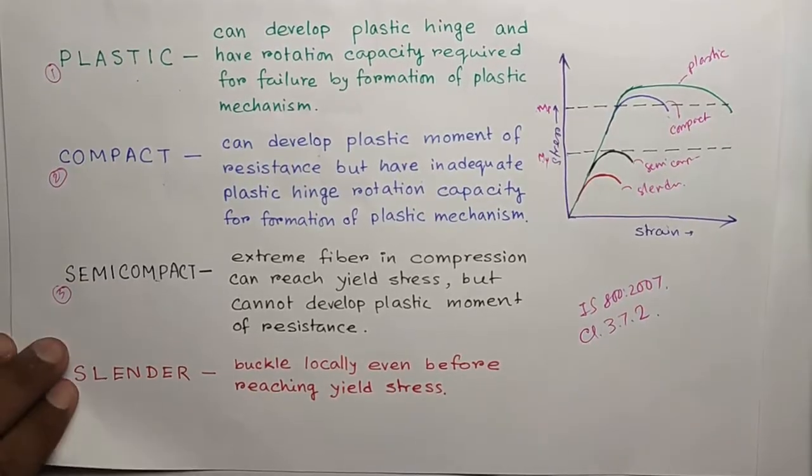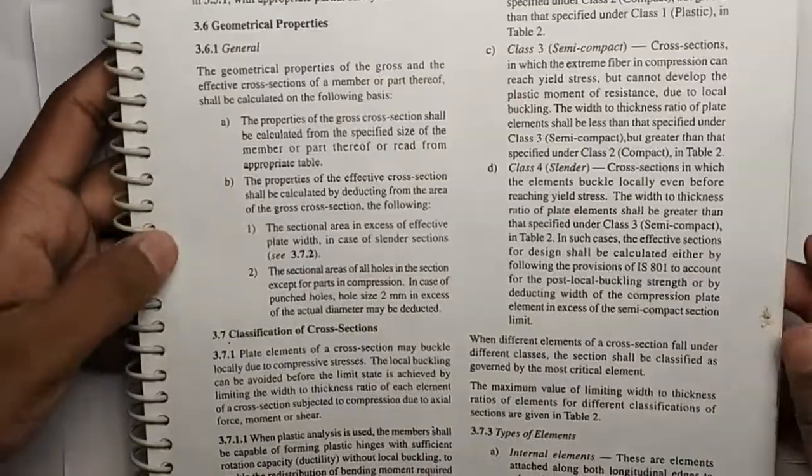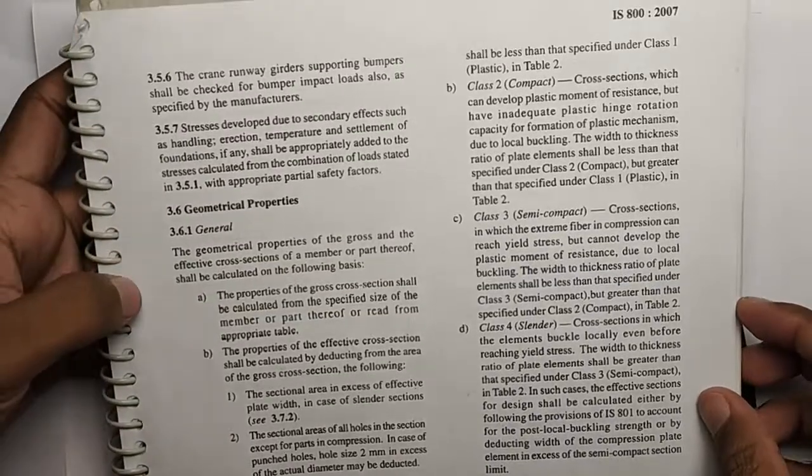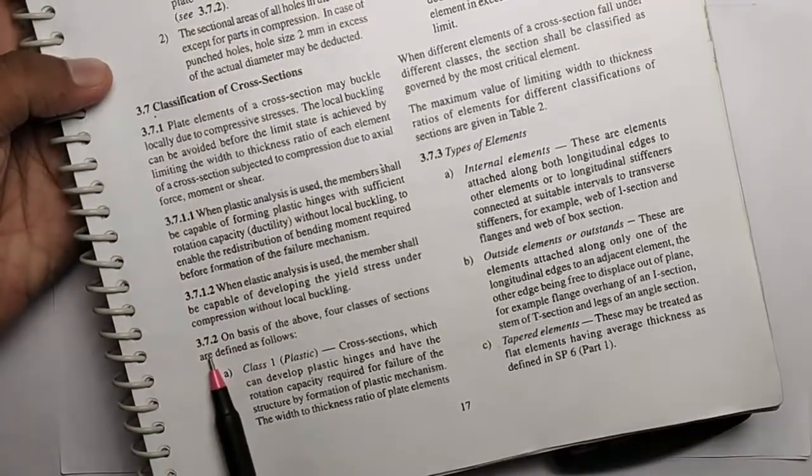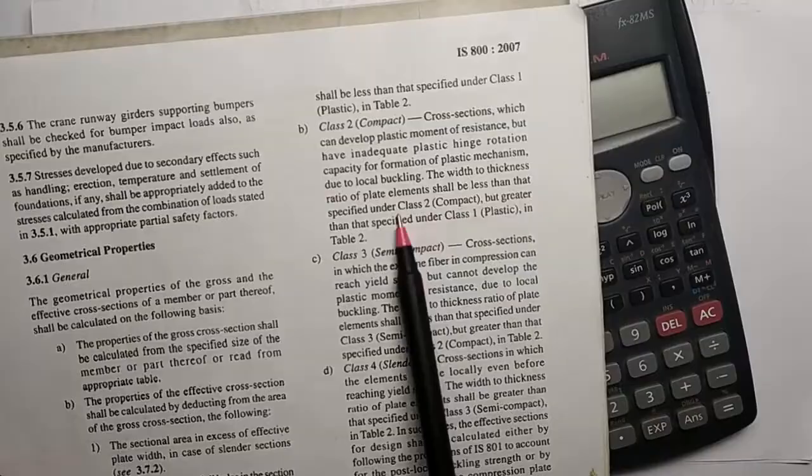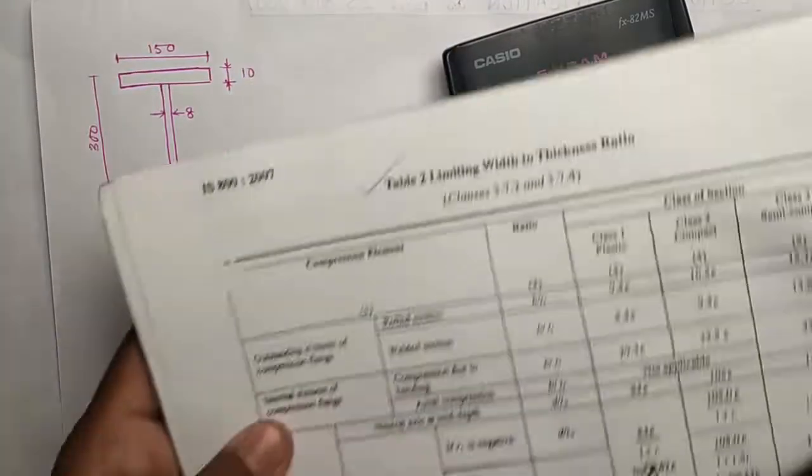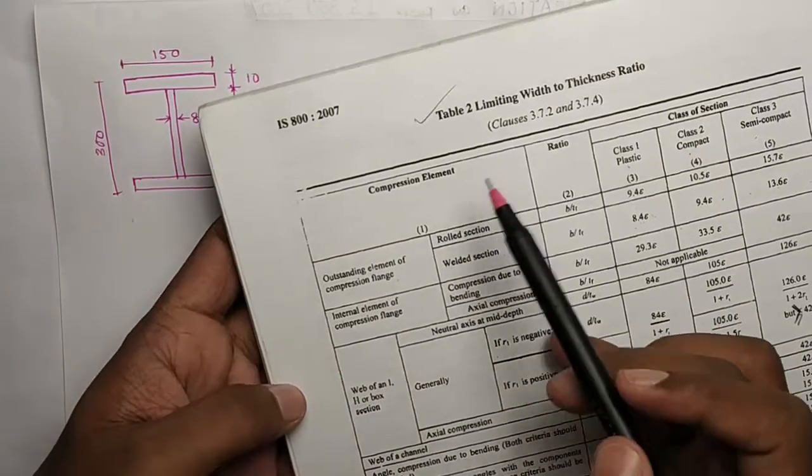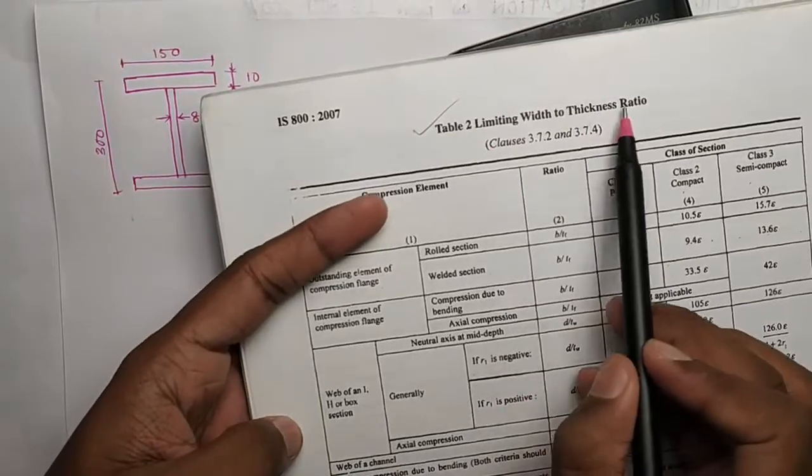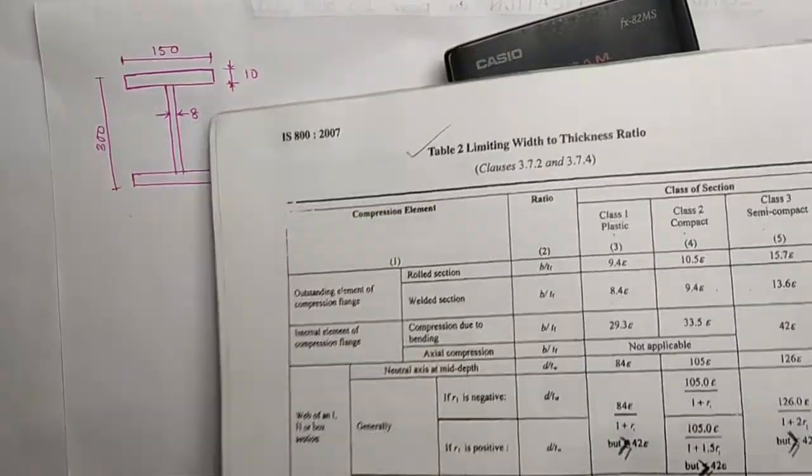So we'll do an example of classifying a section. This is the IS 800-2007. In clause 3.7.2, all the classifications are given. In table 2 of IS 800-2007, this limiting width thickness ratio are given.